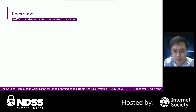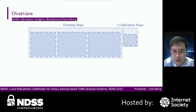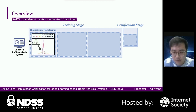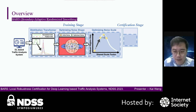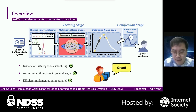Based on the above idea, we propose a Boundary Adaptive Randomized Smoothing framework, called BARS. BARS mainly consists of two stages: training stage and certification stage. Given a deep learning-based traffic analysis system, we first design a suitable distribution transformer for it. Then we optimize the noise shape and the noise scale. After the training stage, we use the distribution transformer to certify the robustness of traffic analyzers. BARS has dimension heterogeneous smoothing noise, assumes nothing about model design, and can be efficiently implemented in parallel.